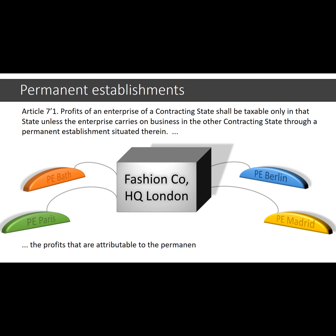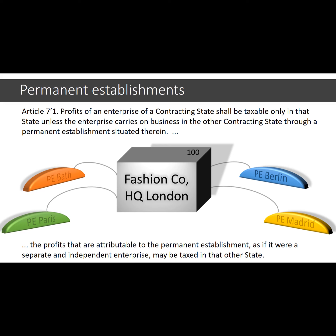As Article 7 concludes: the profits that are attributable to the permanent establishment as if it were a separate and independent enterprise may be taxed in that other state. For example, if Fashion Co. London would have sold a garment for 100 to an independent fashion store in Berlin and that store could have sold that garment for 150 to a German consumer, then PE Berlin likewise should report sales proceeds of 150, less cost of goods sold of 100, as its German taxable income. Meanwhile, Fashion Co. London would have to pay UK tax on the 100 it earned from the sales of PE Berlin, less its cost of goods sold. We will deal with exemption and credit systems for achieving these outcomes at a later stage. For now, we will focus on the types of PEs that exist and the thresholds for realising them.